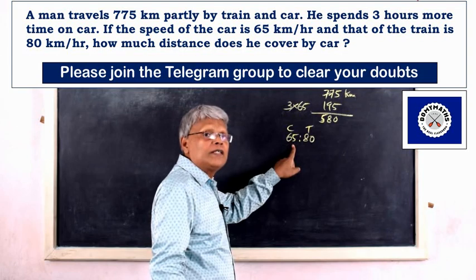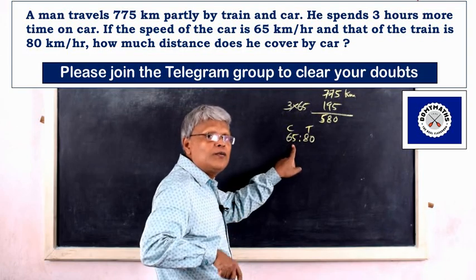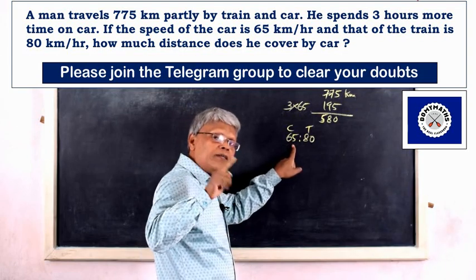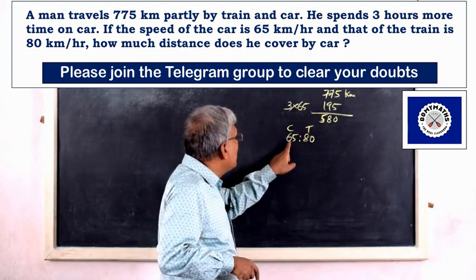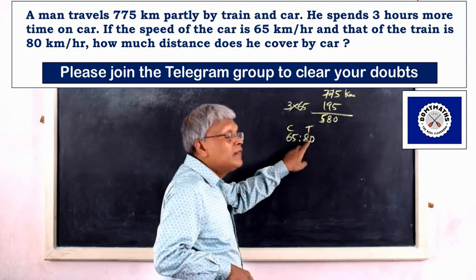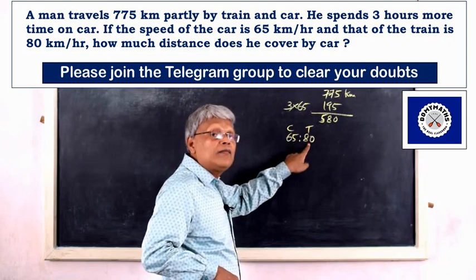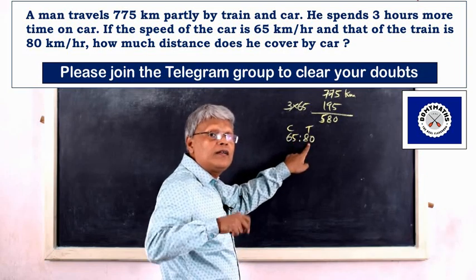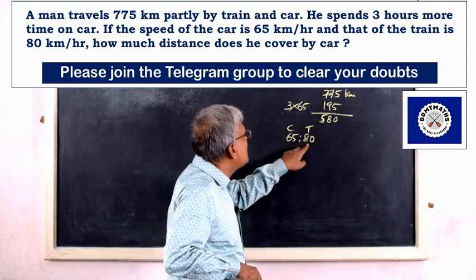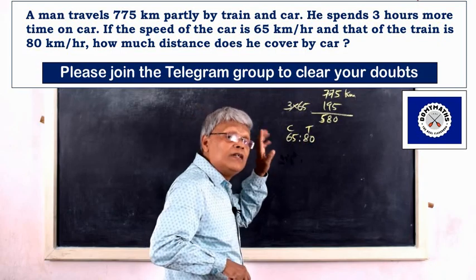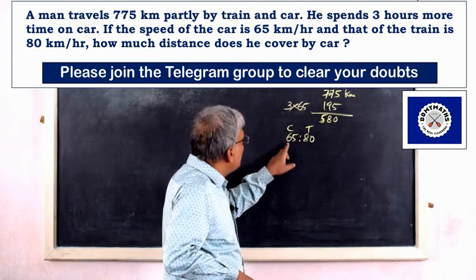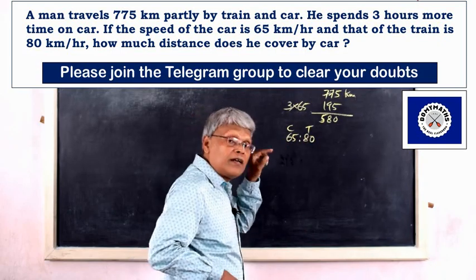Distance equals speed multiplied by time. Distance on car is 65T and on train is 80T.